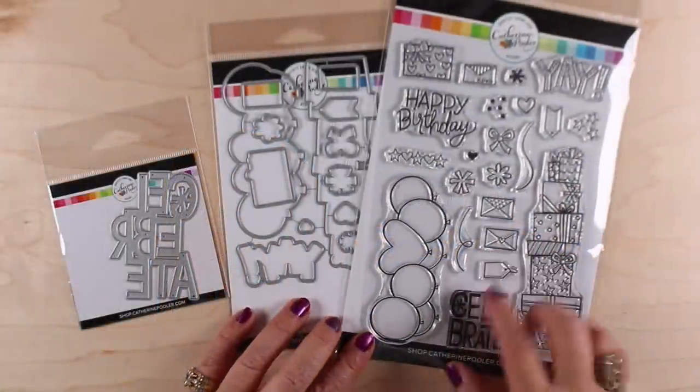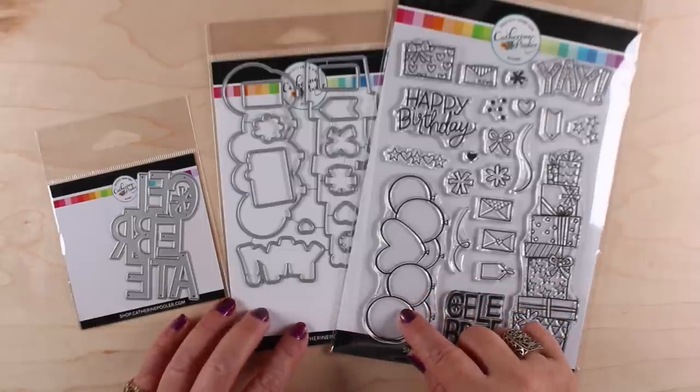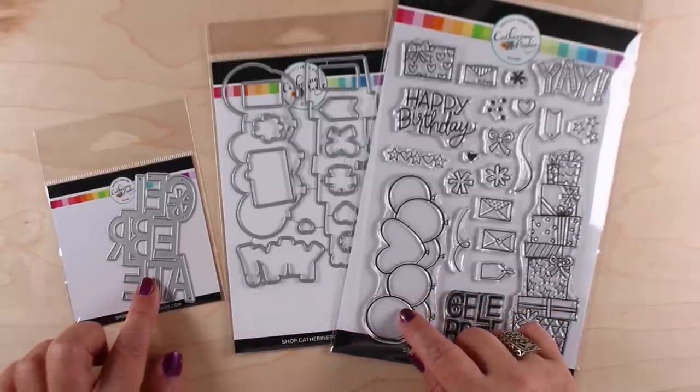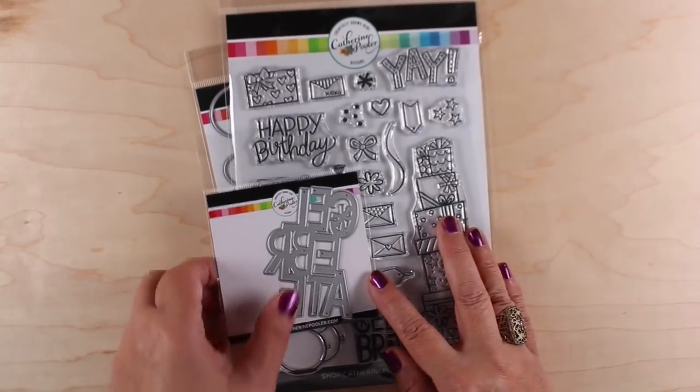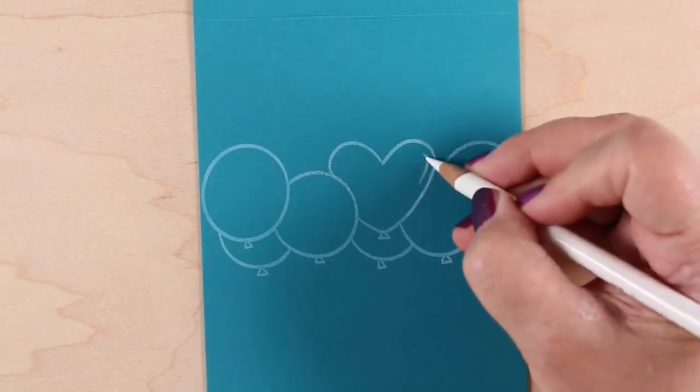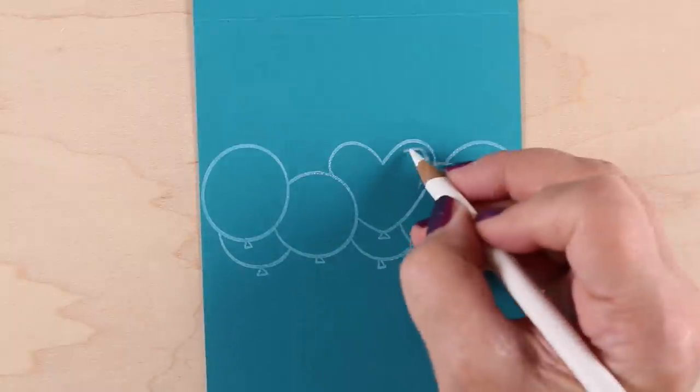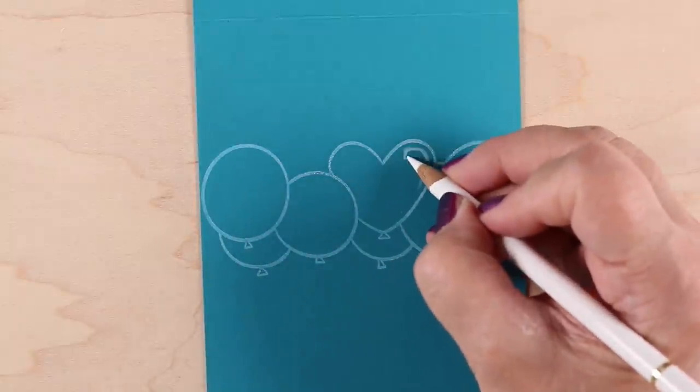So I've got the fun Katherine Pooler stamp set that has these balloons in it that I really wanted to color and the Celebrate die and I'm going to use them together. You can decide if I have gone too far in using them together by the time the card is done, but I'm going to show you how to make these transparent balloons.